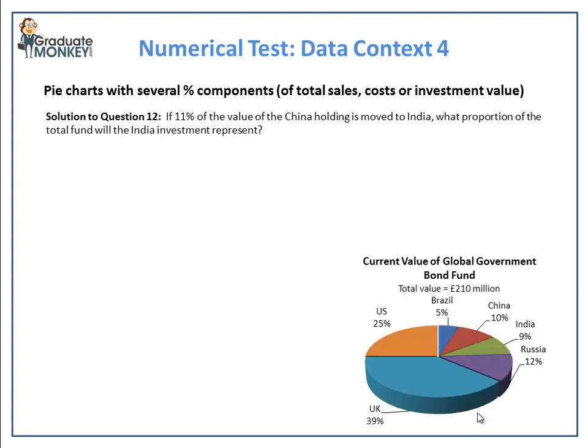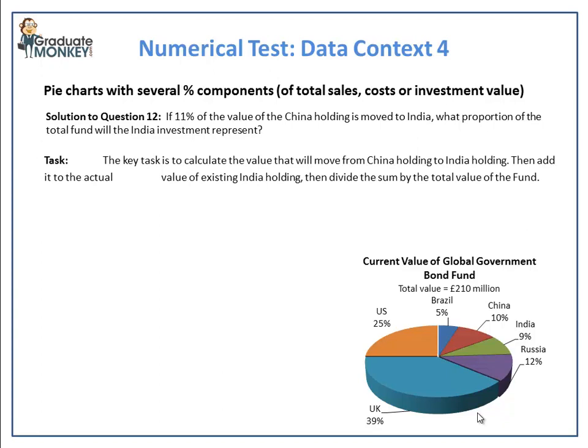The key task here is to calculate the portion of the China holding that will move to the India holding. To do this, we first calculate the China holding by multiplying 10% by 210 million, then multiply it by 11% to arrive at the value that will move to the India holding. Then calculate the India holding by multiplying 9% by 210 million, then add the earlier result from the China holding. Finally, divide the India holding amount by 210 million.